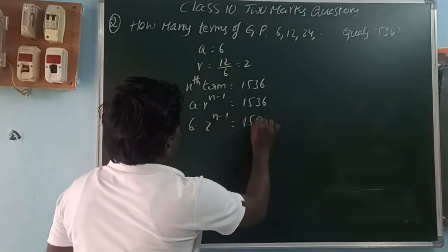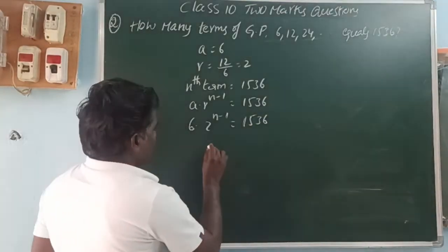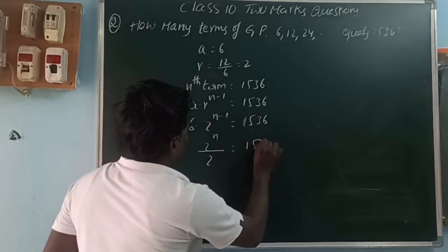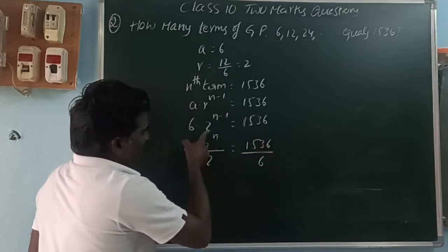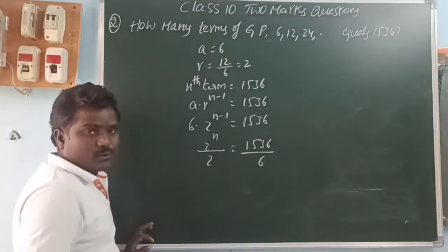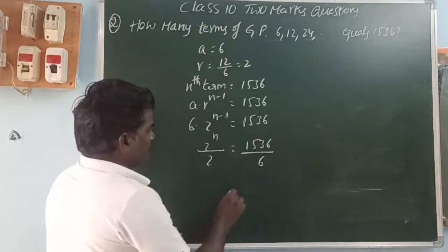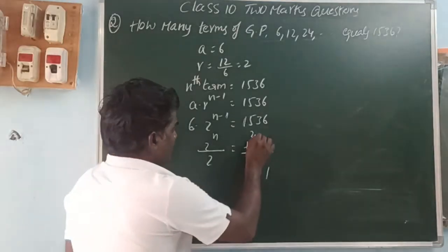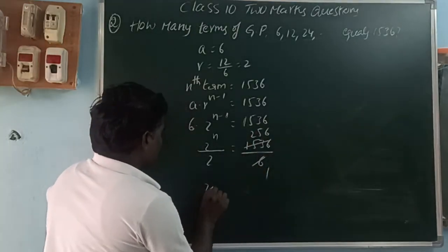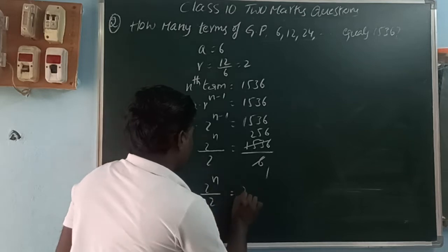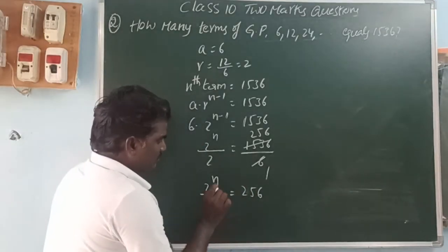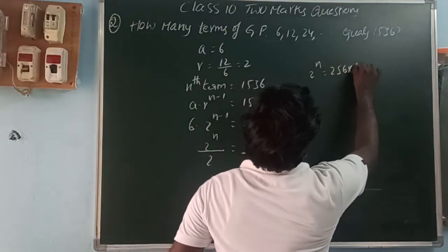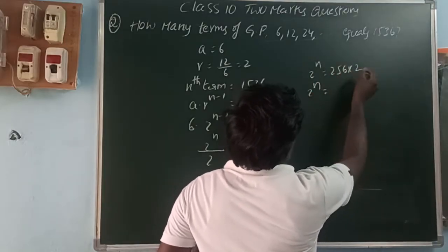So 6 × 2^(n-1) = 1536. Dividing both sides by 6: 2^(n-1) = 1536/6 = 256. Now 2^(n-1) = 256, and since 256 = 2^8, we get n-1 = 8, so n = 9.